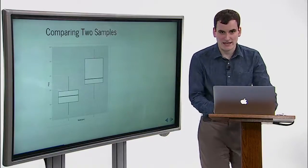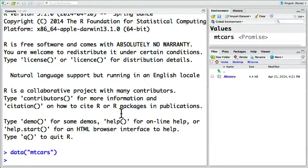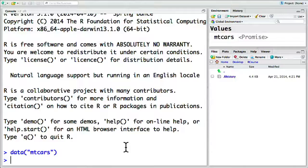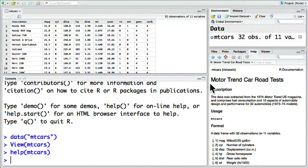Recall that you can load a built-in data set into R with the line data, parentheses, quote, MT Cars. This loads the data into your environment. You can then visualize it with the View function, capital V, View, MT Cars. We see it kind of like a spreadsheet here. You can find out more about this with the Help function. That's Help MT Cars, displays information about the data set here.